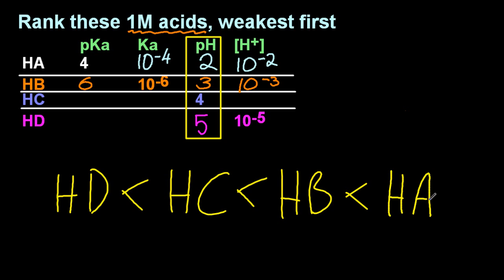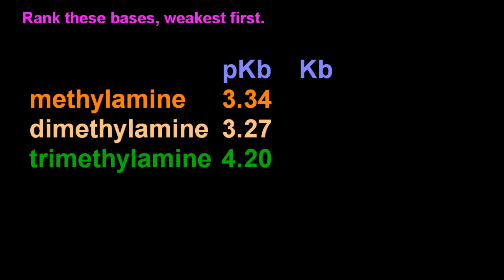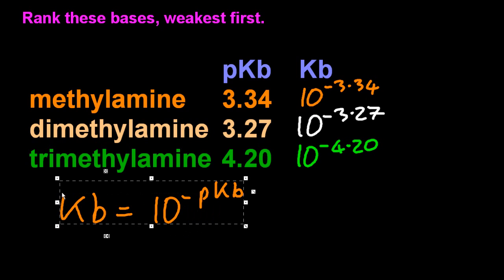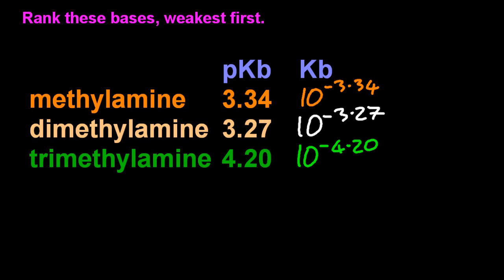Let's look at another one, but with bases now. The IB likes this sort of question — they're for multiple choice. Kb is 10 to the minus pKb, so I'm just going to fill in those numbers in my table to work out which is the weakest base. Have you noticed that the highest pKb is the lowest Kb, and the lowest pKb is the highest Kb? So there's an inverse relationship going on there, just like with pH.